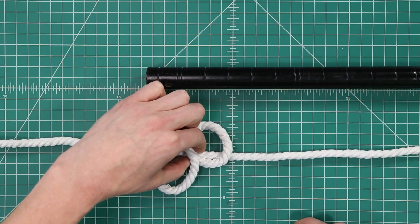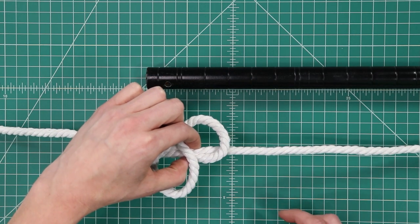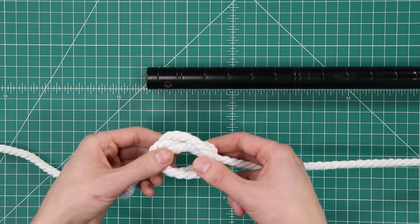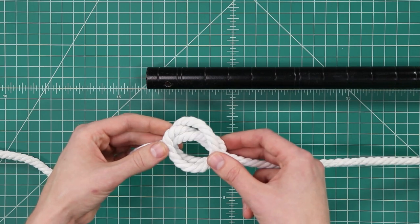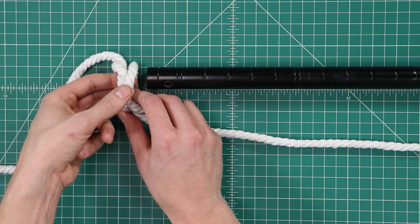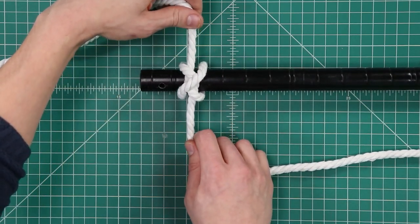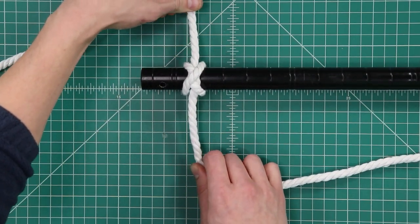Then we're going to pinch all three cords in the middle of that figure eight, and lift it up, and then we'll fold our two loops down, so that we've got this nice knot right here. We can then slide it right over the end of our object, tighten both ends, and there's our finished constrictor knot.